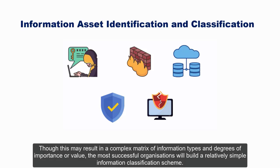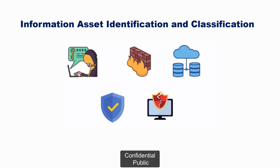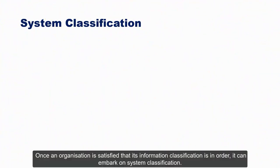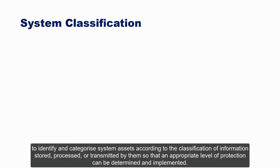Though this may result in a complex matrix of information types and degrees of importance, the most successful organizations will build a relatively simple information classification scheme. For instance, an organization may develop four levels: Secret, Restricted, Confidential, and Public. Once an organization is satisfied that its information classification is in order, it can embark on system classification. Like various information assets, information systems can also be classified according to different security and operational criteria.